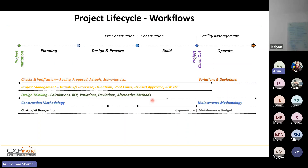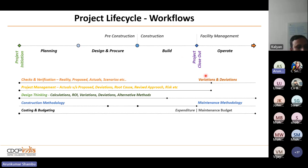Looking at workflows: checks and verifications exist throughout the project — from the time you get site access, you check whether the site matches your drawings, and this continues. When the project closes out, most of the checked data becomes variations and deviations. Similarly, project management exists from day one — covering actions, deviations, root causes, and various themes.